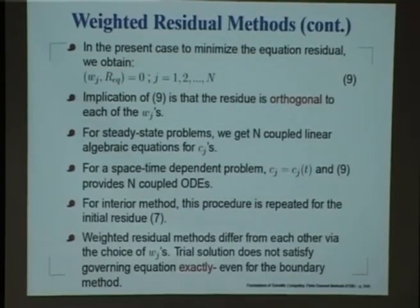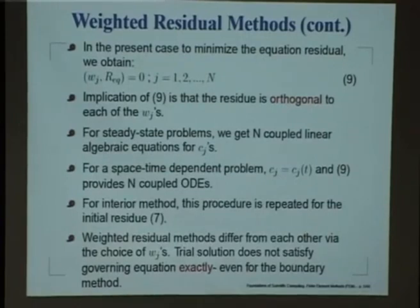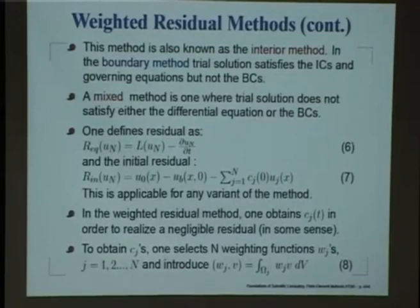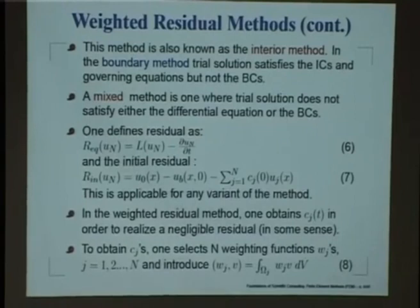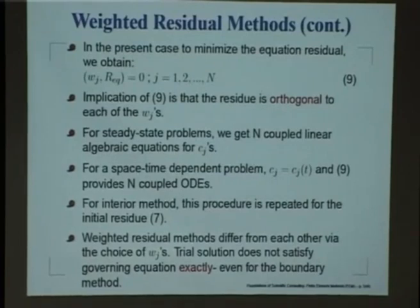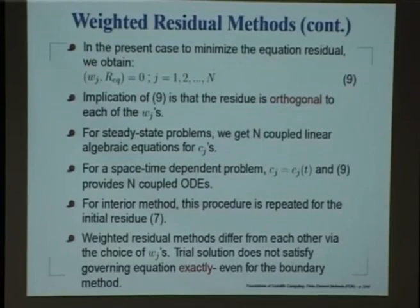So, for this space-time dependent problem, equation 9 would essentially give you some kind of ordinary differential equation for the coefficient function c_j of t. That is the essential difference between time-independent and time-dependent problems: in one case you get a linear algebraic equation, in the other case you get a coupled ODE. So, you would require initial conditions for those ODE equations, which you get from the initial residue defined in equation 7, from which you could get some relationship for c_j at t equal to 0.